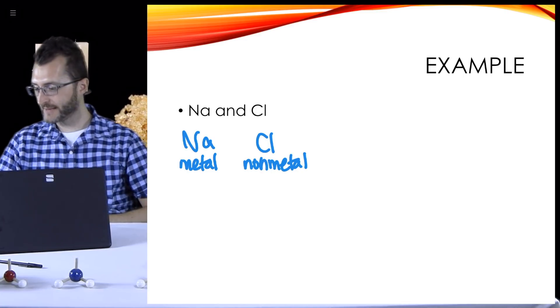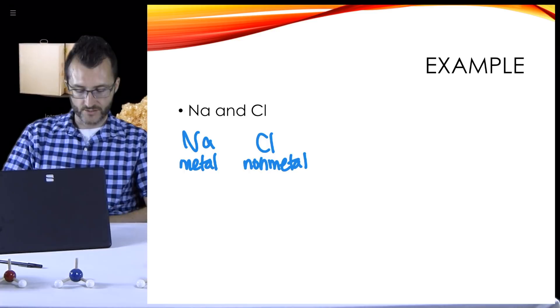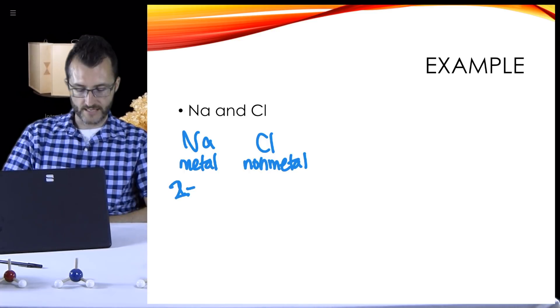Na is over on the left-hand side of the periodic table, so it's a metal. And chlorine over on the right-hand side of the periodic table would make it a non-metal. Because if this was covalent bonding, it would be very different. This is ionic.